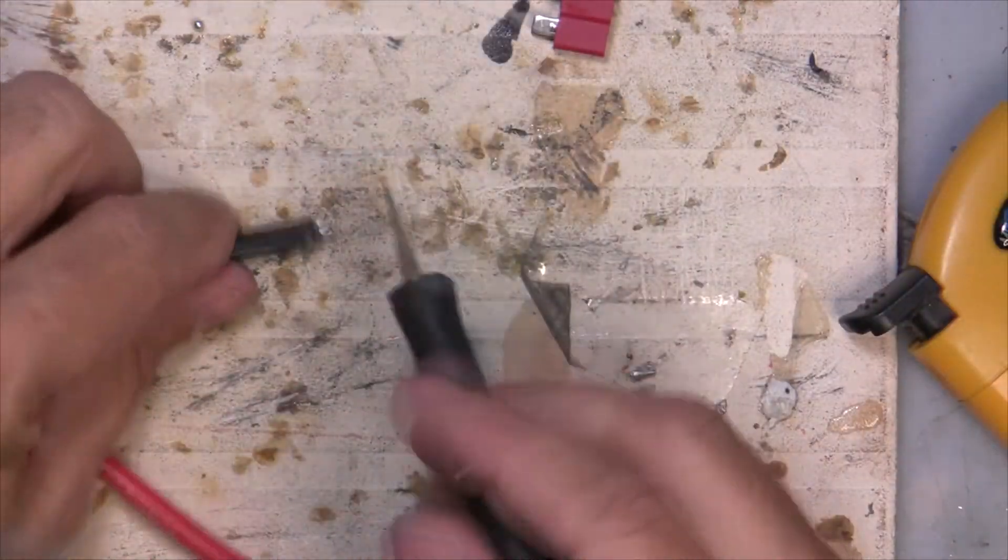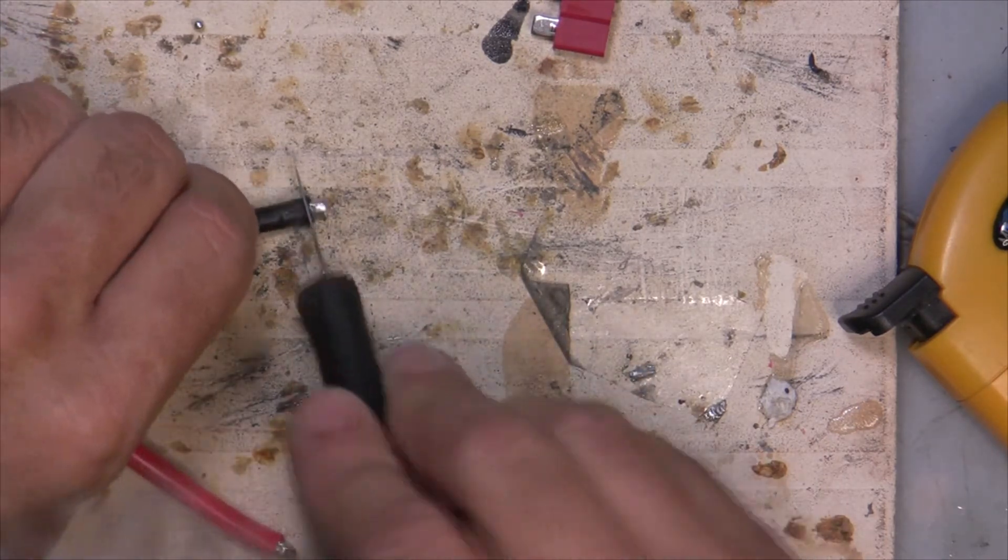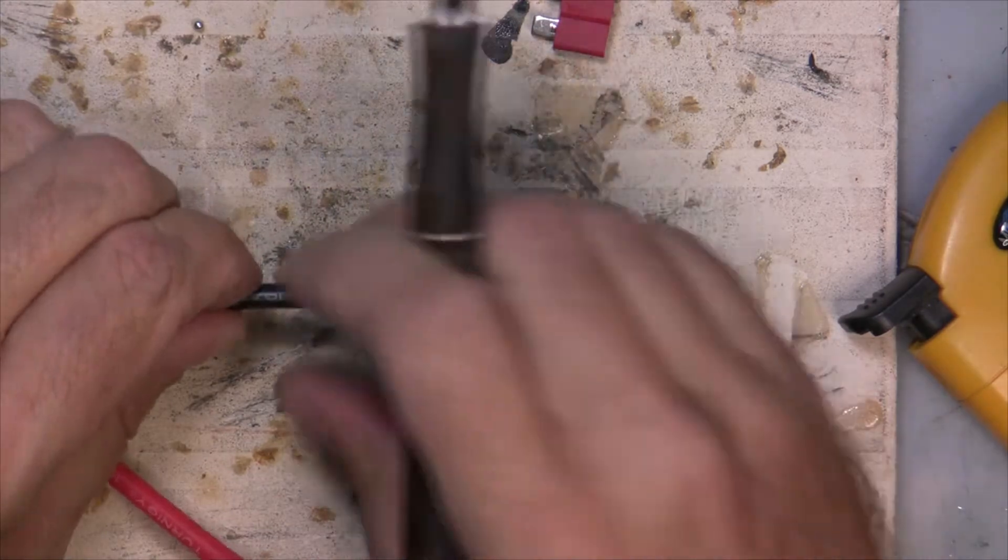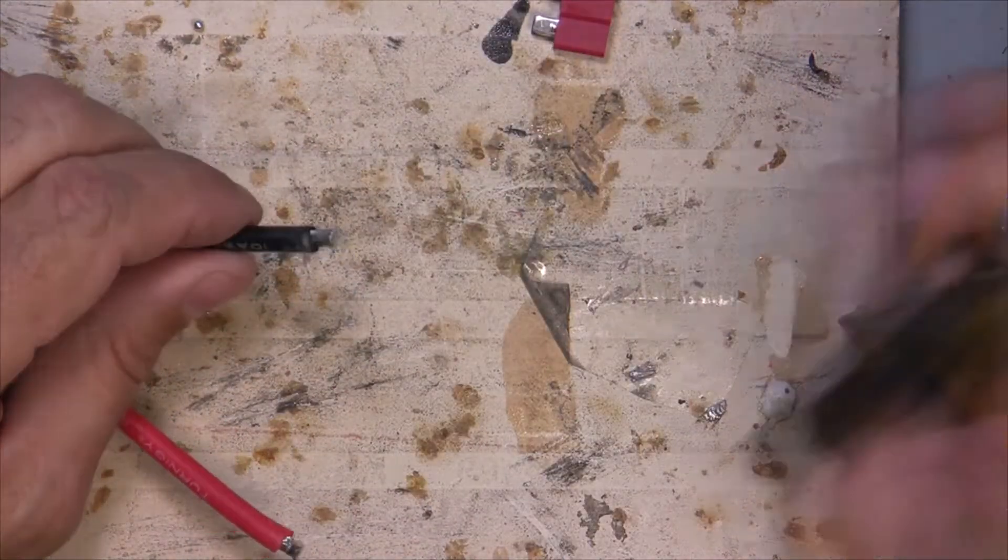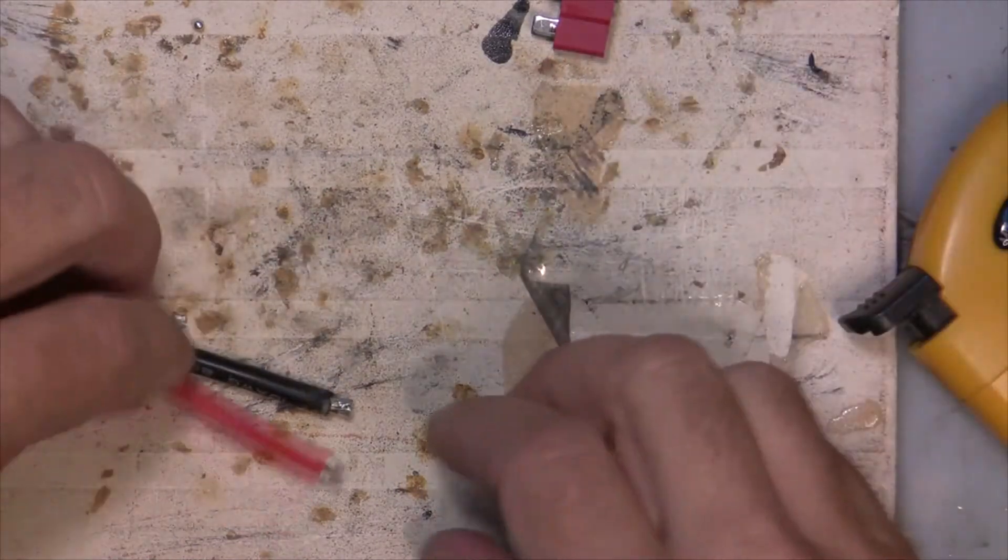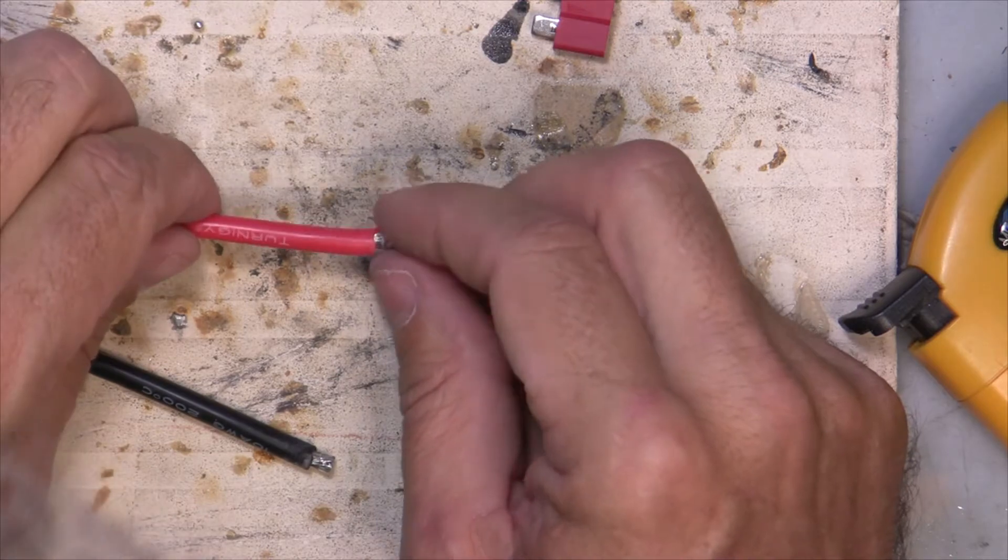Now let's do the negative. Trim off a little excess insulation. Okay, good. You can see now that the wire isn't fully soldered.